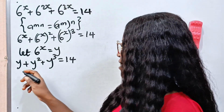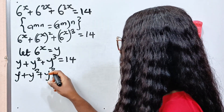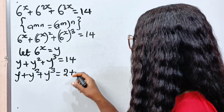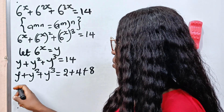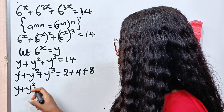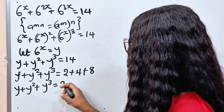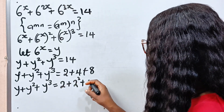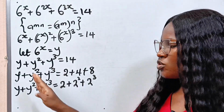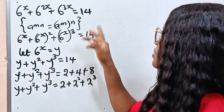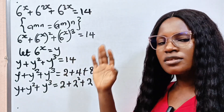Back to what we are doing. So I am going to write this as y plus y squared plus y to the power of 3 equals 2 plus 4 plus 8. We have y plus y squared plus y to the power of 3 equal to 2 plus 2 squared plus 2 to the power of 3. Now we are going to transfer everything to the other side. Anytime you see a question in this form, this is how to go about it — it always works out.